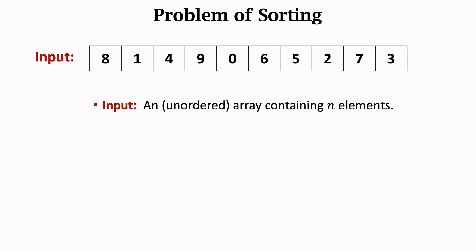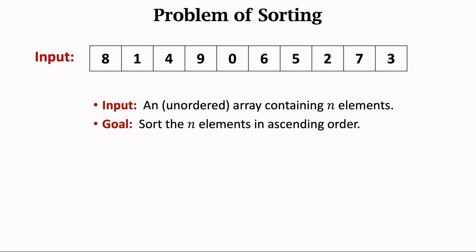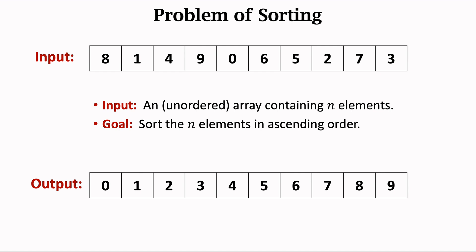Let's first define the problem of sorting. The input is an array filled by n elements. Initially, the array is unordered. The goal is to sort the n elements in ascending order. After sorting, small elements are in the front and big elements are in the back. Of course, you can also sort arrays in descending order; the sorting algorithms can be applied in almost the same way.